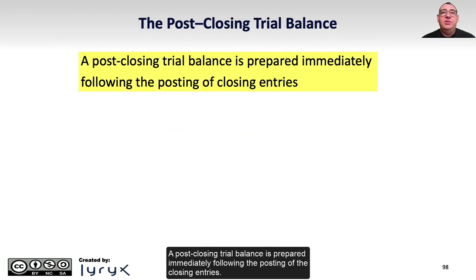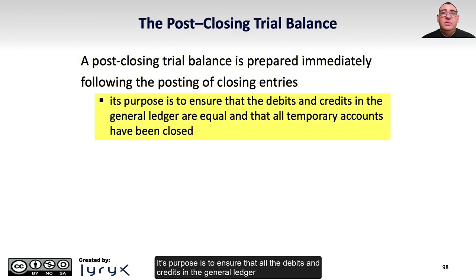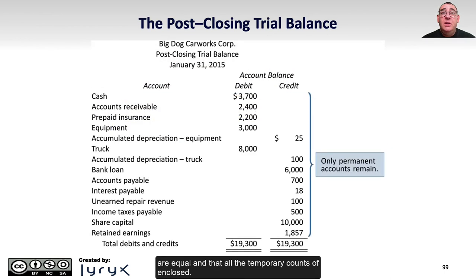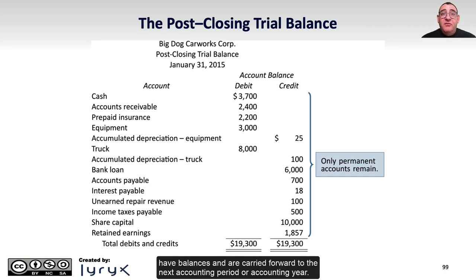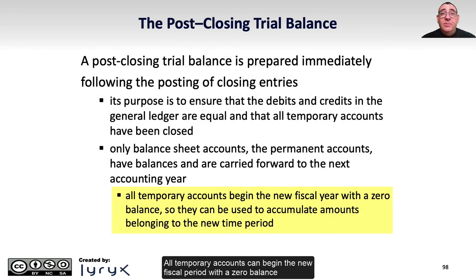A post-closing trial balance is prepared immediately following the posting of the closing entries. Its purpose is to ensure that all the debits and credits in the general ledger are equal and that all the temporary accounts have been closed. Only the balance sheet or permanent accounts have balances and are carried forward to the next accounting period. All temporary accounts begin the new fiscal period with a zero balance so they can accumulate amounts belonging to the new time period.